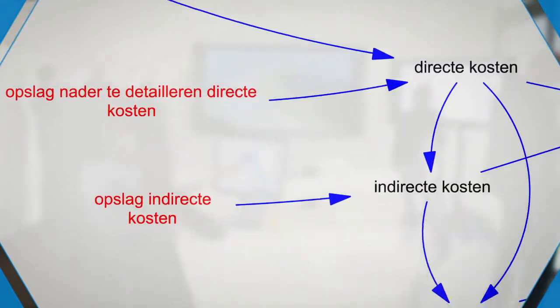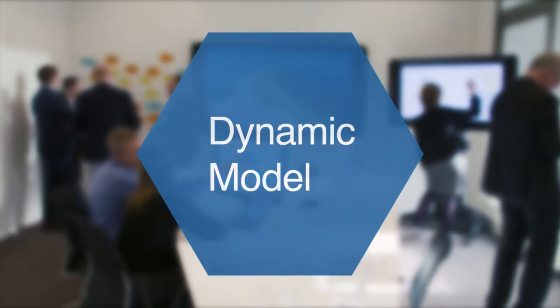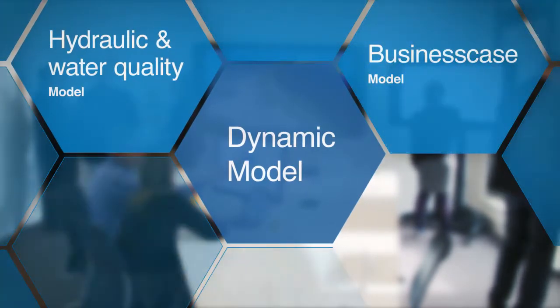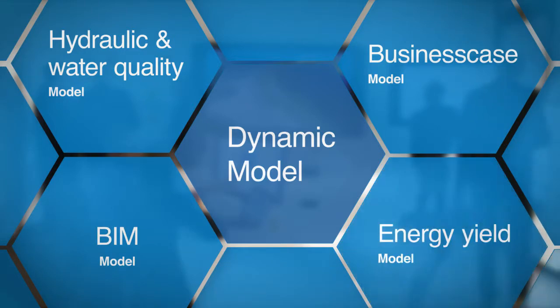To demonstrate how this works, four models have been parametrically linked with the dynamic model. Namely, the hydraulic and water quality model, the business case model, the BIM model, and the energy yield model.